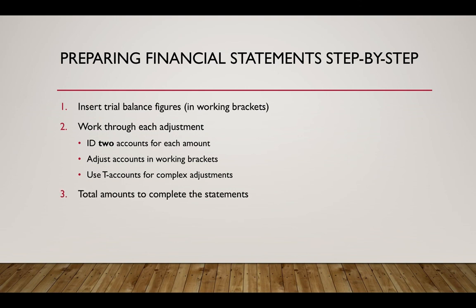Once you've done all the hard work of the adjustments, all you need to do is total the amounts you've shown in brackets and put the totals in the actual amount columns so that you can complete your financial statements and then add everything up to get your statement totals or net profit at the end of the statement of income. With these simple guidelines, you should hopefully find doing the adjustments to the financial statements a little bit easier.